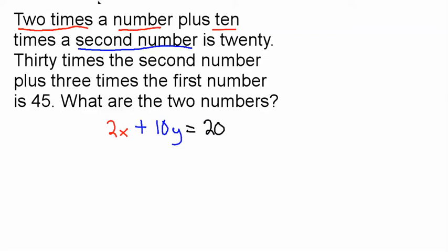Alright, and then it says 30 times the second number plus 3 times the first number. Now the second number we know was 10y, so when they say 30 times the second number, we have to put that here. The second number is y.